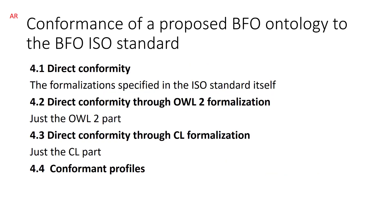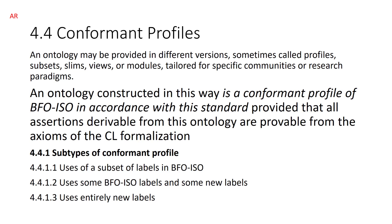There are four kinds of conformity to the BFO ISO standard. If you have an OWL formalization, it might be one of the two OWL formalizations already documented in the standard, giving you direct conformity. It might have direct conformity both to the OWL and to the Common Logic formalization, or only to one of them, or it might have a conformant profile. A conformant profile can even be one of the null cases where you just have the labels and no axioms at all — that's still a conformant profile.